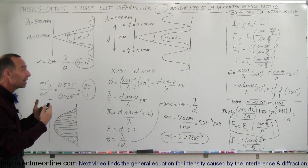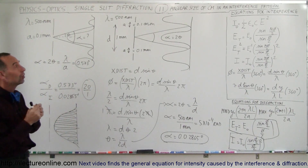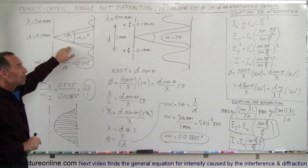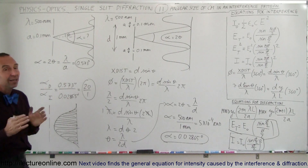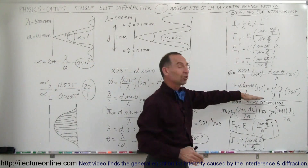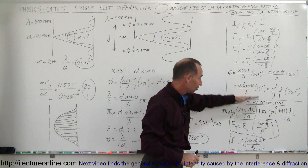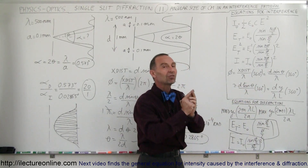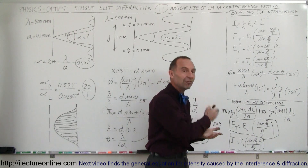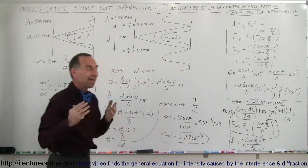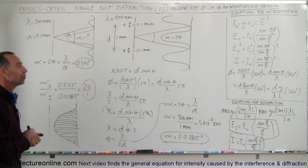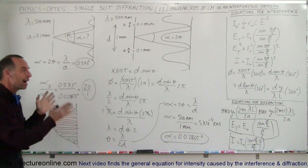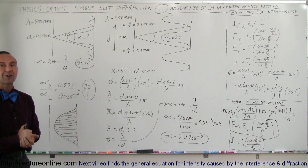So with double slits, not only do we have to worry about the interference pattern, we also have to worry about the diffraction pattern. Ultimately, rather than looking at them separately, we're going to combine both the interference and diffraction equations into one single equation describing intensity as a function of both. In the next several videos, we'll explore this phenomenon and calculate that combined intensity. Stay tuned.